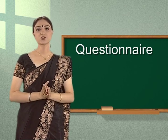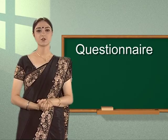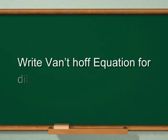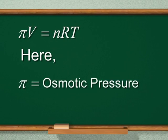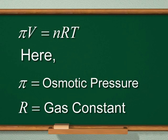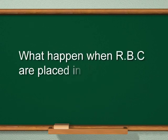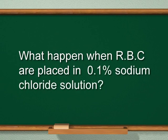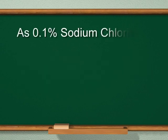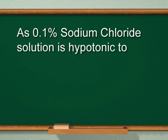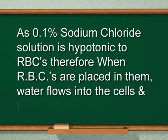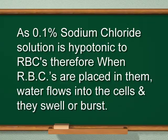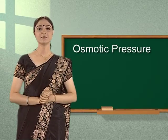Students, it is time to check your knowledge. Let us review what we have learnt today. Write Van't Hoff's equation for dilute solutions. Answer: pi × V equals n × R × T, where pi represents osmotic pressure and R is the gas constant. Next question: What happens when RBCs are placed in 0.1% sodium chloride solution? Since 0.1% sodium chloride solution is hypotonic to RBCs, when RBCs are placed in it, water flows into the cells and they swell or burst. I hope you have enjoyed today's lesson — see you next time, thank you.